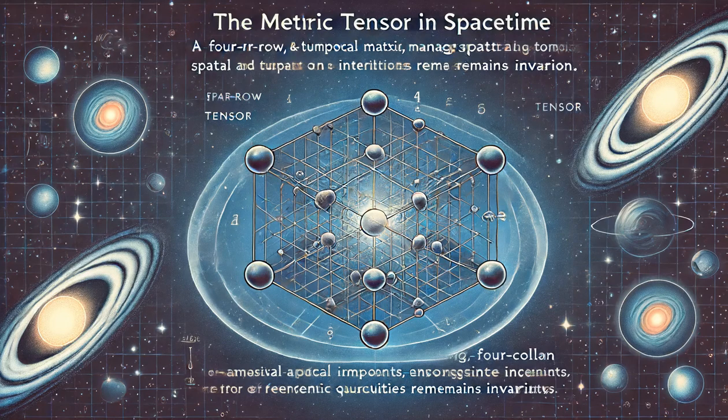The Minkowski metric and Lorentz transformations form the backbone of special relativity, ensuring the consistency of the laws of physics across different inertial frames. The metric tensor plays a fundamental role in describing the geometry of spacetime and allows physicists to generalize the concepts of distance to four-dimensional spacetime.